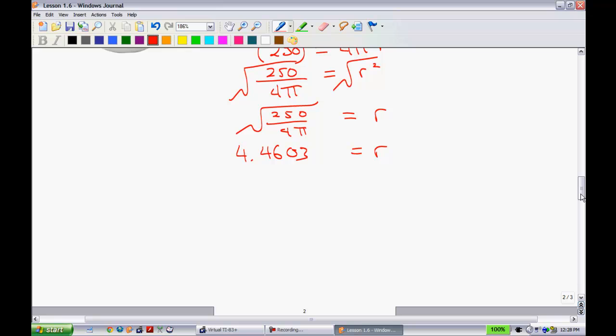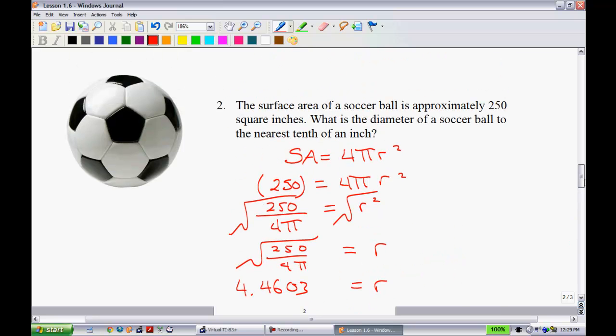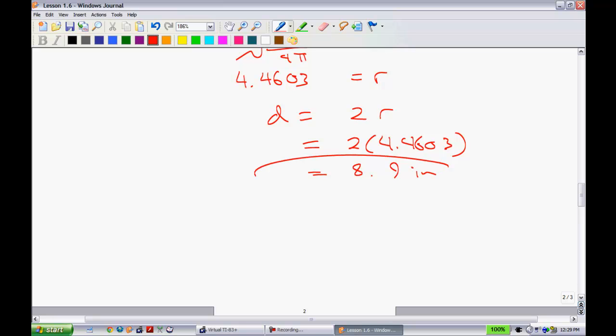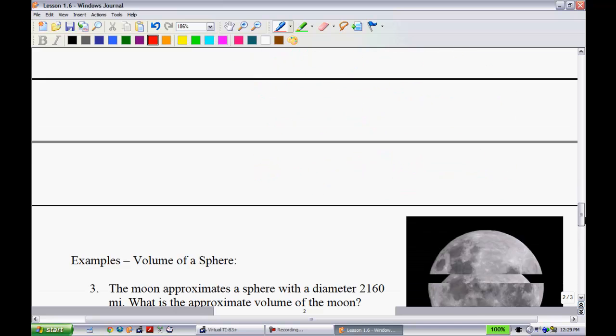All right, and then, like I said, to get the distance, the distance is equal to 2r. So, we can just say the distance is equal to 2 times that 4.4603. And we get 8.9. I think it's around one decimal place. To a tenth of an inch. Yeah, so we get 8.9 inches. Okay, not too bad. Now, we're going to kick it up a notch here in a second.